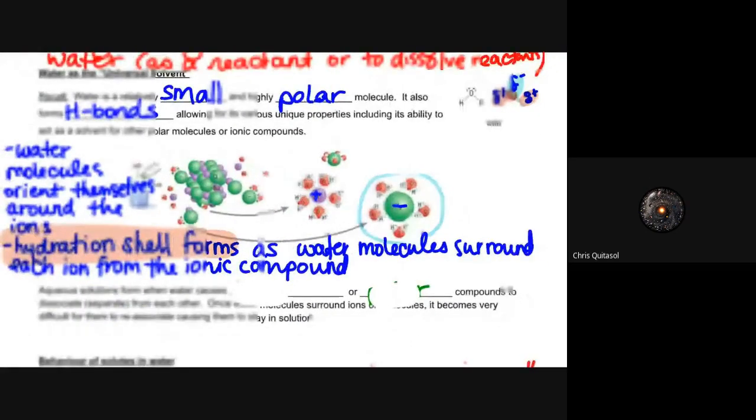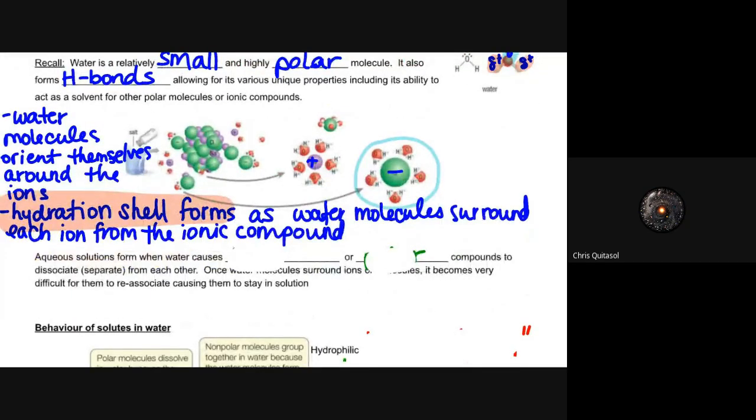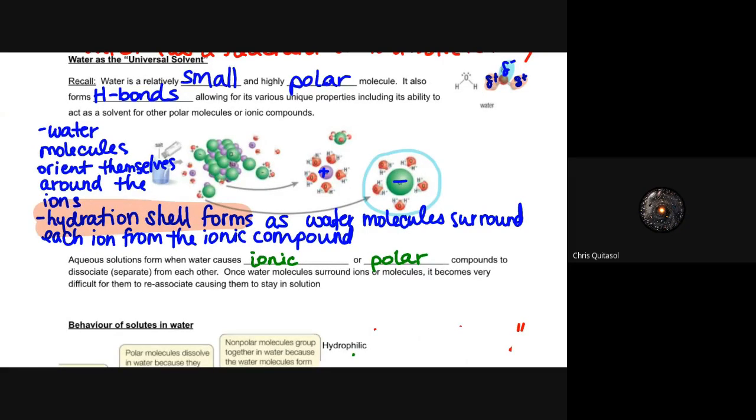So what we eventually start to see is that aqueous solutions can be formed as a result of these properties. Water can cause or aqueous solutions form when water causes ionic or polar compounds to disassociate or separate or dissolve from each other. And once water molecules surround those ions or molecules, it becomes very difficult for them to reassociate, causing them to stay in the solution. And that leads to those properties that arise from any type of substance dissolved in water. Hydration shells allow for water properties to take on the things that it's dissolved in, which is a huge component in biology. Once things start to dissolve in it, that's where the real magic starts to happen.